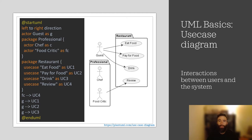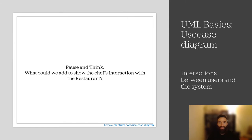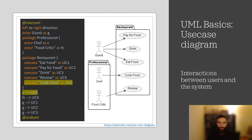This example is a use case. Use cases work by describing the typical interactions between the users of a system and the system itself, providing a narrative of how a system is used. We do this by describing a scenario — a sequence of steps describing an interaction between a user and a system. In this example, we have a guest interacting with a restaurant and the professional persons: chef and food critic. The guest eats food, drinks, and pays for food, while the food critic reviews the restaurant. The chef's interaction with the restaurant is not depicted. If we were to show the chef's interaction, we'd add cook food — drawing a line to that action inserted into the restaurant package. Remember, use use case diagrams when capturing the functional requirements of a system.